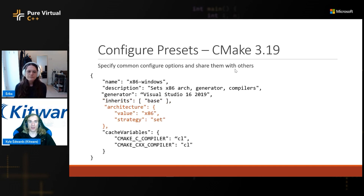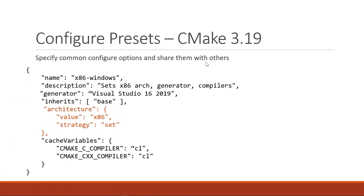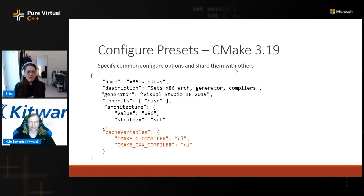Architecture sets whether you're building for x86, 64-bit, ARM, or anything else — this is for Visual Studio. Then we have cache variables: in this case, we're setting the C and C++ compiler, but anything you would set with the -D flag on the CMake command line can be set in this cache variables entry. All the command line options you can pass to CMake map directly to an option in the configure preset object.